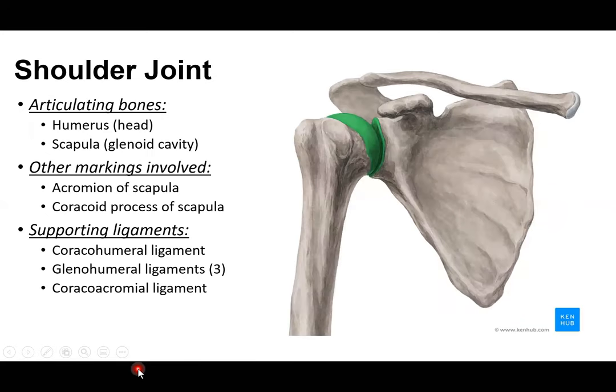The shoulder joint, also called the glenohumeral joint, is located in the proximal upper limb. It is a ball-and-socket synovial joint, giving it the widest range of motion of any joint — including flexion, extension, abduction, adduction, medial and lateral rotation, and circumduction. It is the most mobile joint in the body.